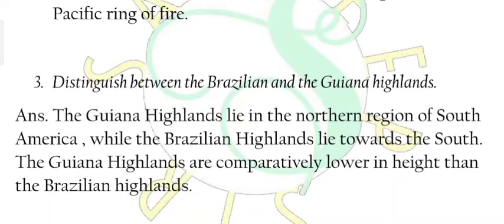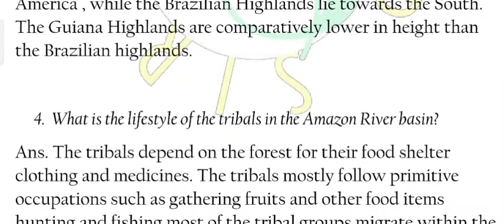Question 3: Distinguish between the Brazilian and the Guiana Highlands. Answer: The Guiana Highlands lie in the northern region of South America, while the Brazilian Highlands lie towards the south. The Guiana Highlands are comparatively lower in height than the Brazilian Highlands.